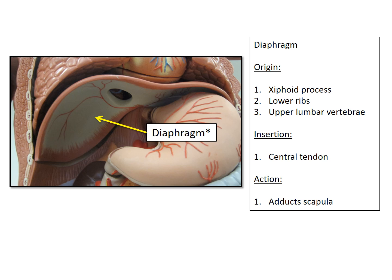The action of the diaphragm is for inhalation and passive exhalation. This is different from the internal intercostals because the diaphragm won't be forcing air out of the lungs — it's only going to be passively expelling air. This is a major difference between the diaphragm and the intercostals.